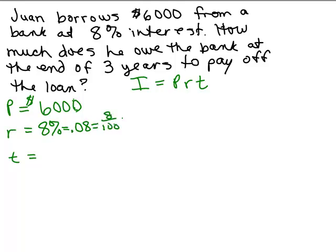You can reduce that fraction, but in other words, you need to write it either as a decimal or as a fraction. And what's the amount of time we're talking about? Three years. Remember the time always has to be in years.